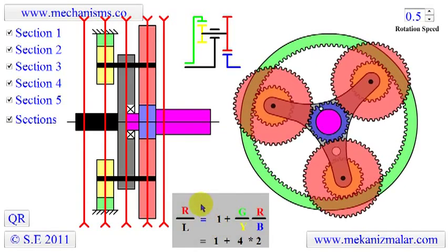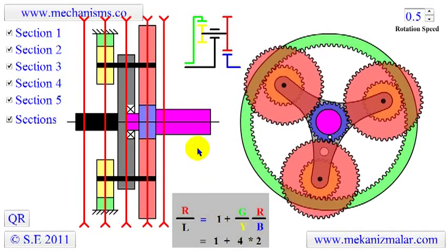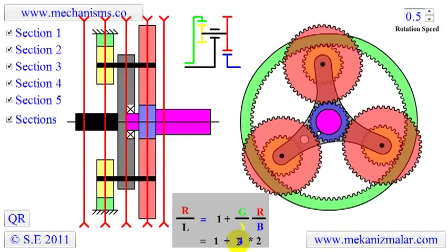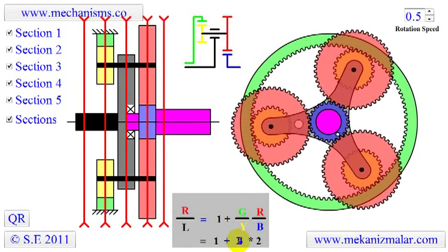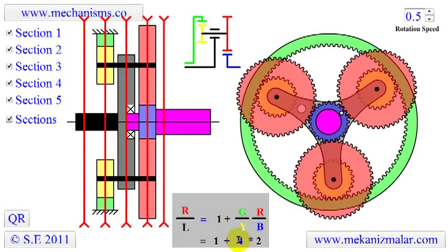If we substitute the previously given teeth numbers, 96, 24, 48, and 24, into the equation given, we come up with a speed ratio of 9.